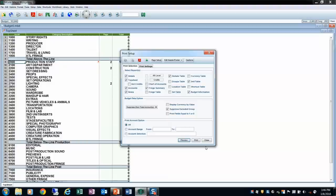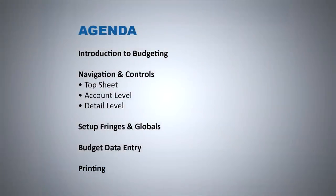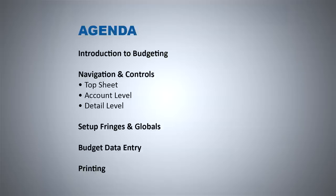Today we've gone over a lot of material. We did an introduction to budgeting — jumping around the program, talking about key terms, budget info setup, and how to edit units. Then we talked about how to navigate around Movie Magic Budgeting with six different methods. We talked about setting up fringes and adding globals, and how both are crucial when building a budget. Then we did budget data entry examples, talking about how to add a person who has different rates.